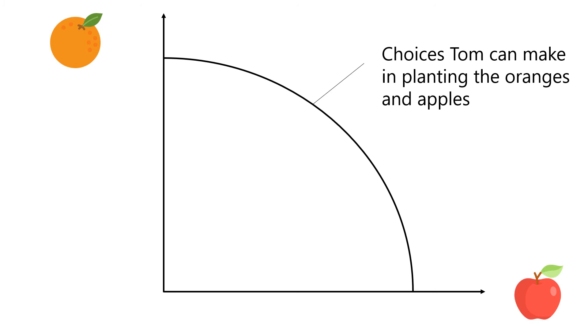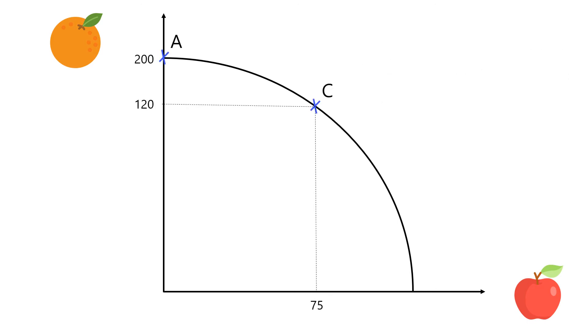The points along the curve reflect the choices Tom can make in planting the oranges and apples if he utilizes all his resources efficiently. Let's look at Points A and C. At Point A, Tom focuses all his resources and is able to plant 200 oranges. So what happens when Tom chooses C, to plant 120 oranges and 75 apples instead?